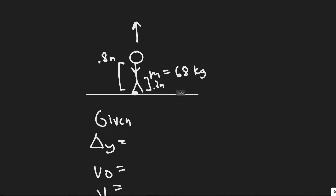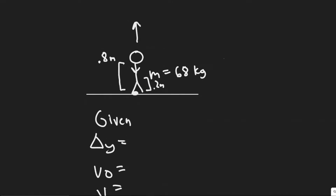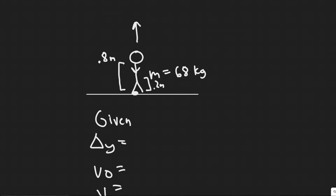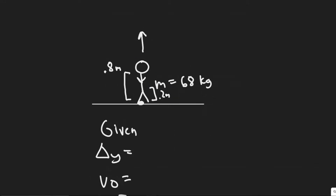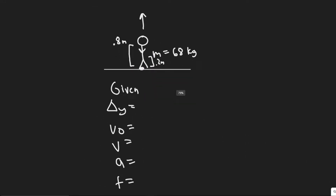We have this person here, and we know they have a mass of 68 kilograms. What's going to happen is they're going to start here, they're going to crouch down 0.2 meters, and then they're going to jump 0.8 meters in the air. What we're trying to find is the force they're going to have to exert in order to make this jump.